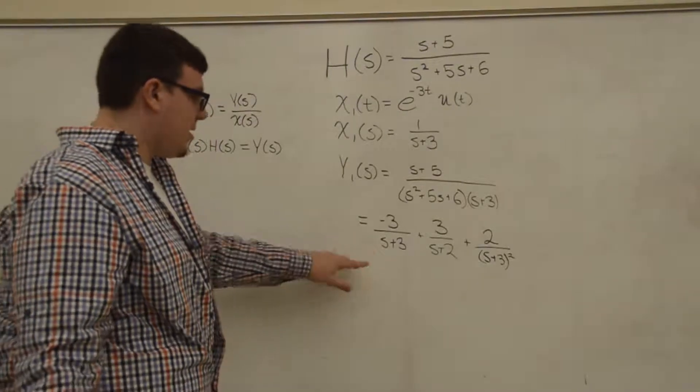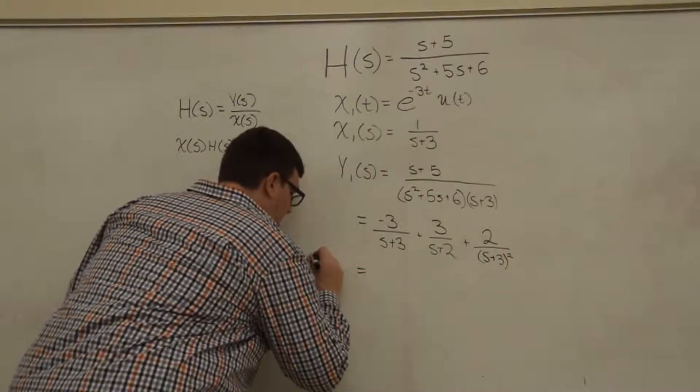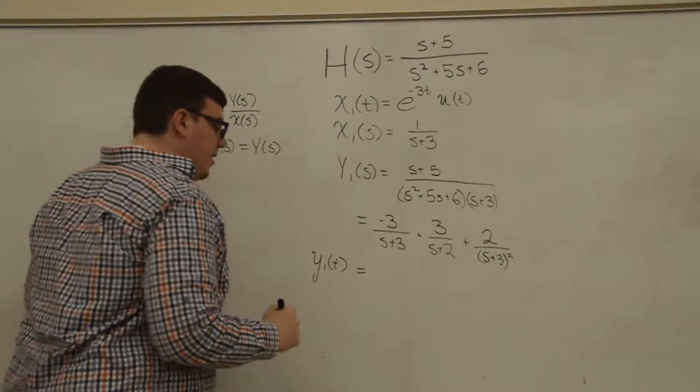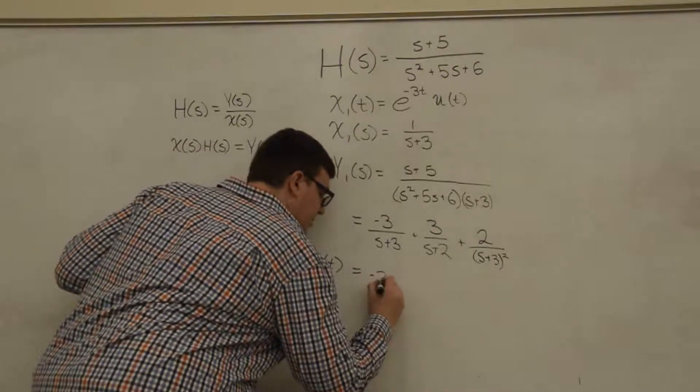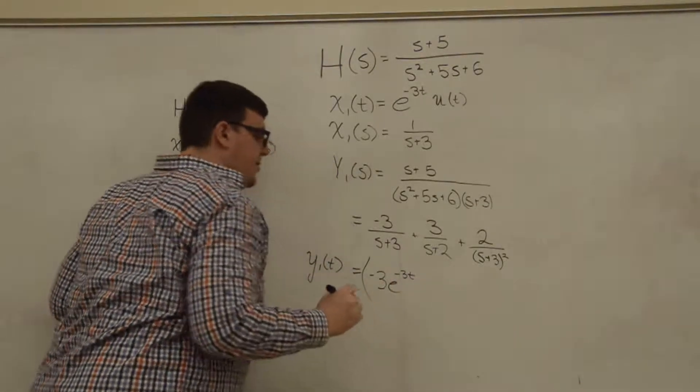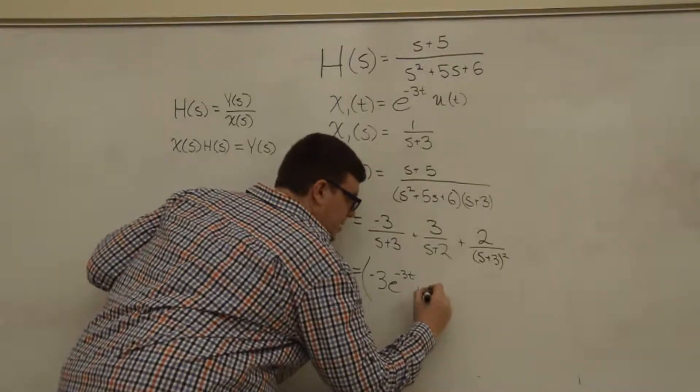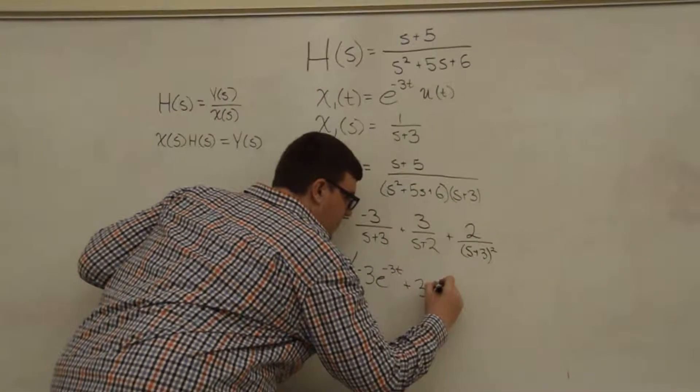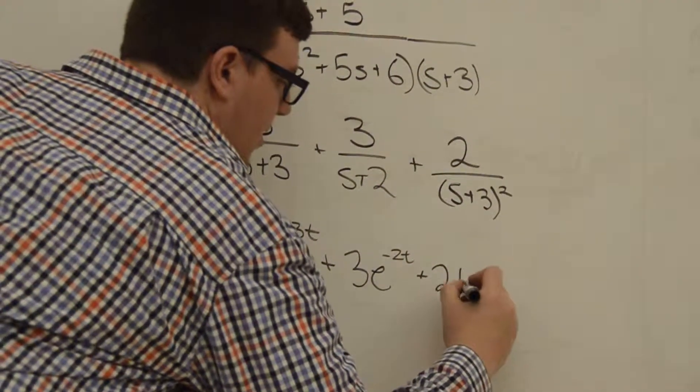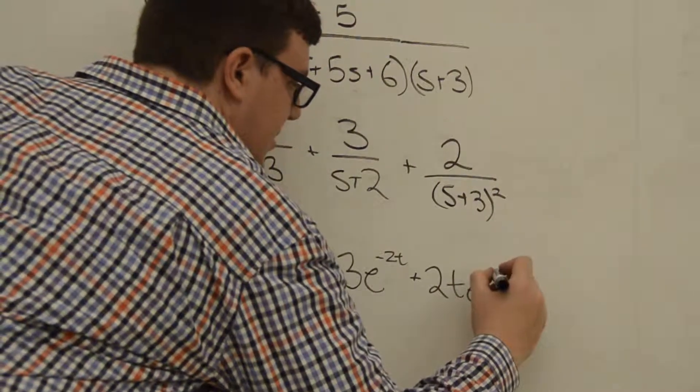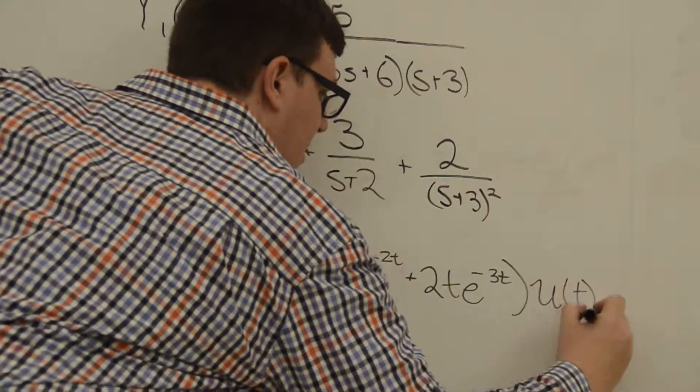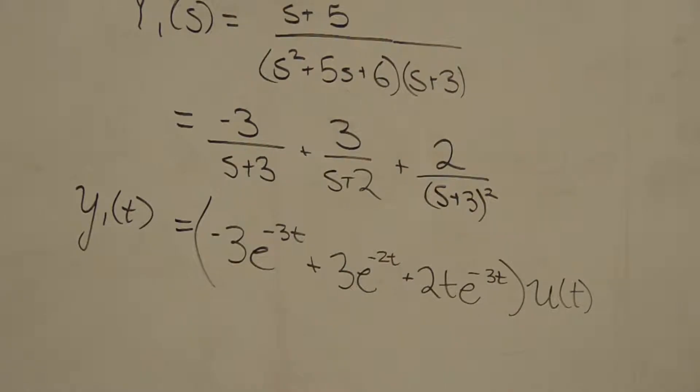And so these are all of the form that we can take an inverse Laplace transform of. So the inverse Laplace transform here is going to get us Y(t), Y₁(t), which will denote our output, and in the time domain we should get (-3e^(-3t) + 3e^(-2t) + 2te^(-3t)) times the Heaviside function. And so that's our first output.